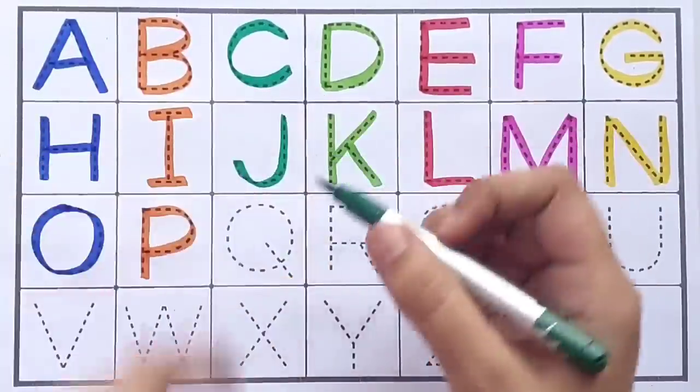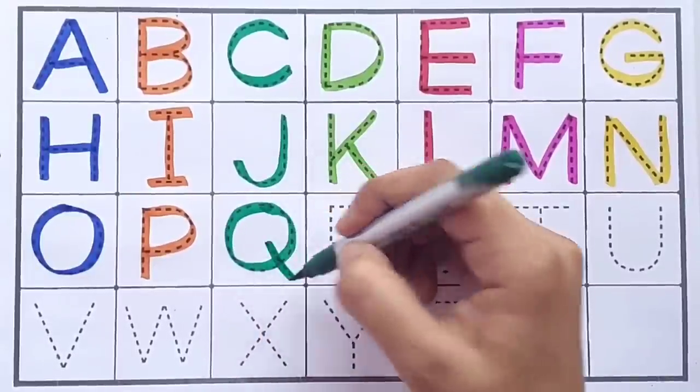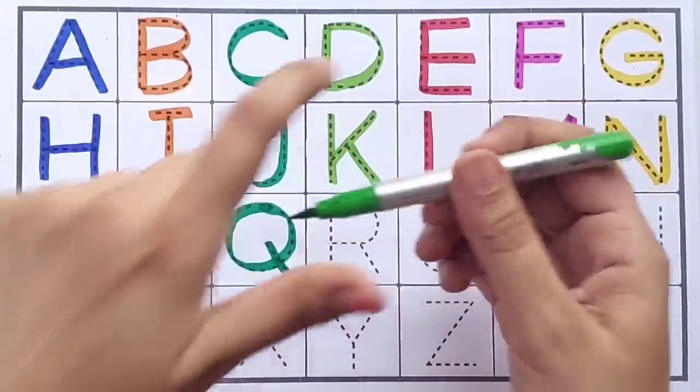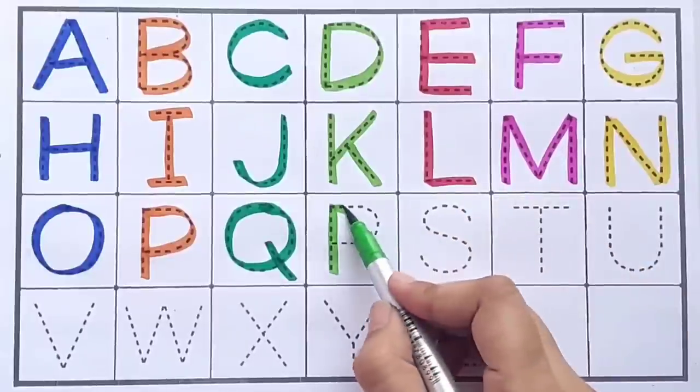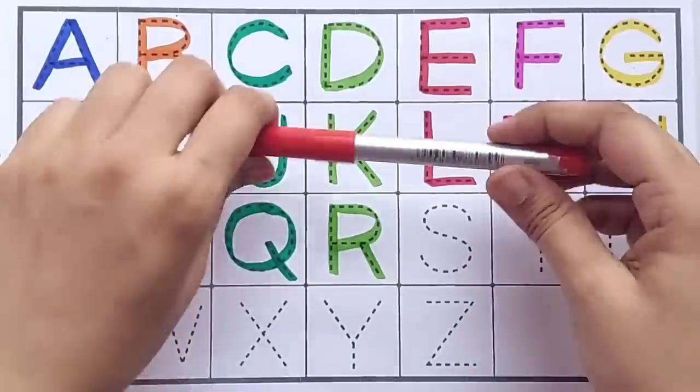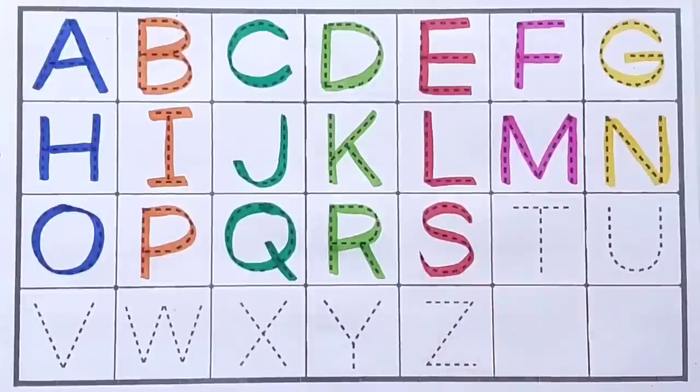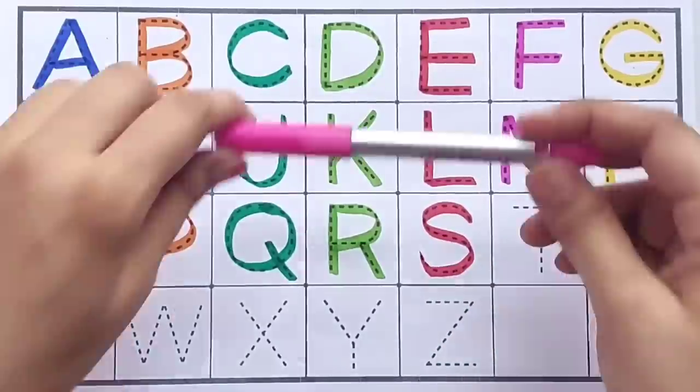Q, Q for queen, green color. R, R for rabbit, light green color. S, S for sun, red color, pink color.